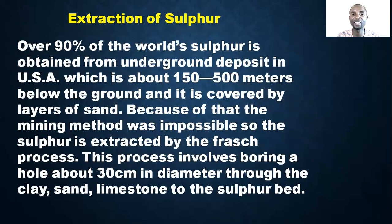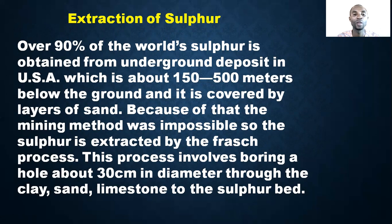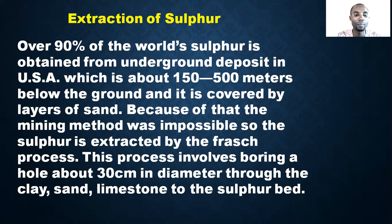How can sulfur be extracted? Since it occurs in combined form and is not found free, over 90% of the world's sulfur is obtained from underground deposits in the US, about 150 to 500 meters below the ground, covered by layers of sand. Because of this, conventional mining was impossible, so sulfur is extracted by the Frasch process.